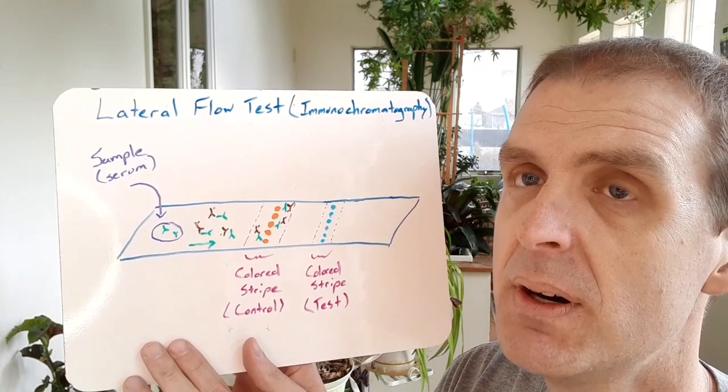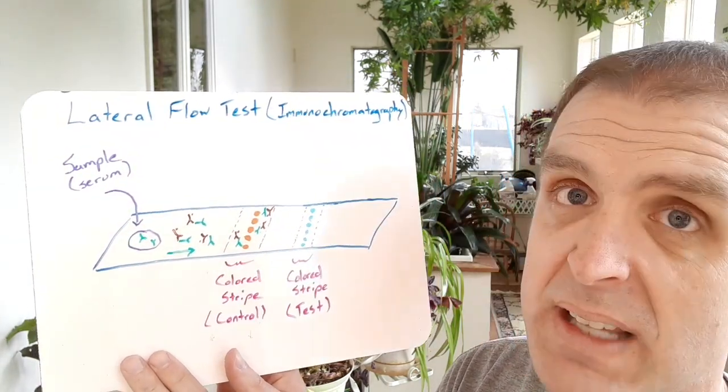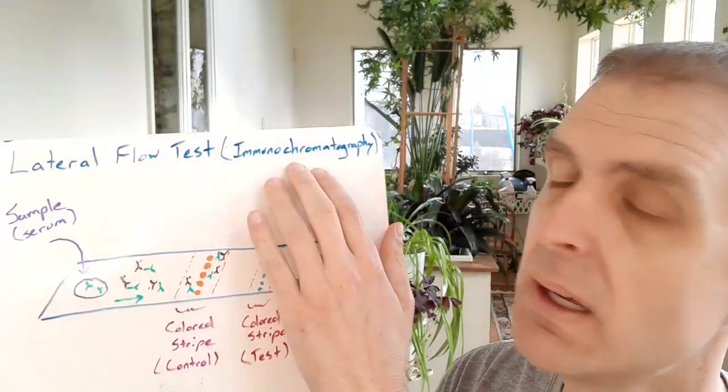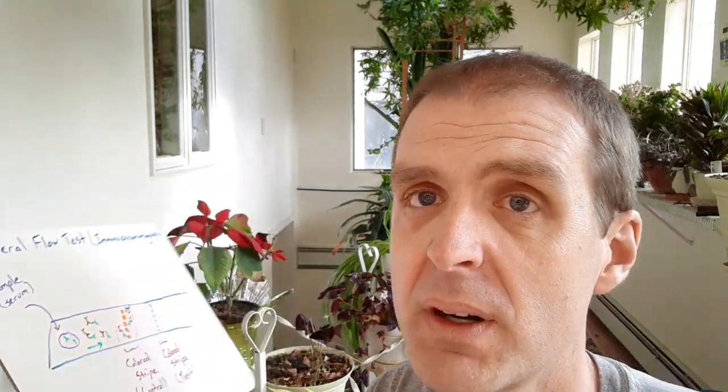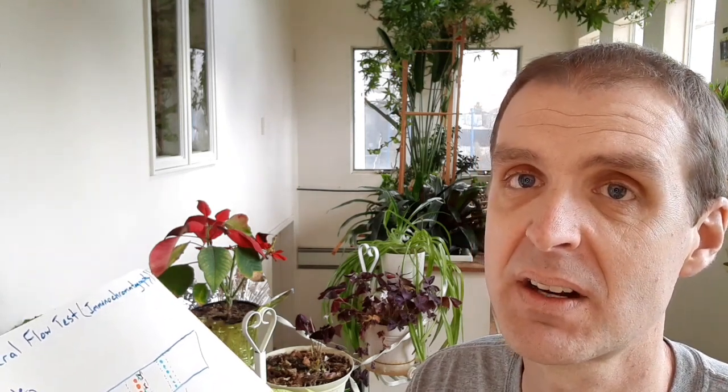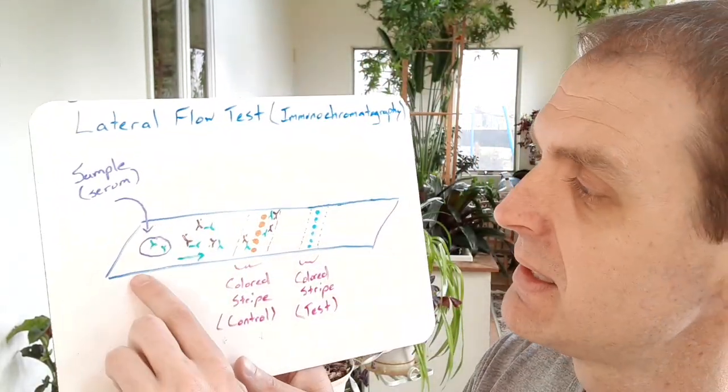The other type of assay that can detect the antibodies is a lateral flow test, and this can also be called immunochromatography. So if you're familiar with at-home pregnancy tests, then you've done lateral flow immunochromatography before. The difference there is that when you're pregnant, you would be detecting a specific protein in the urine that would indicate that you're pregnant, whereas in the assay that we're going to talk about here, we're not looking for a pregnancy protein—we're looking for a protein in the form of an antibody that can detect coronavirus.